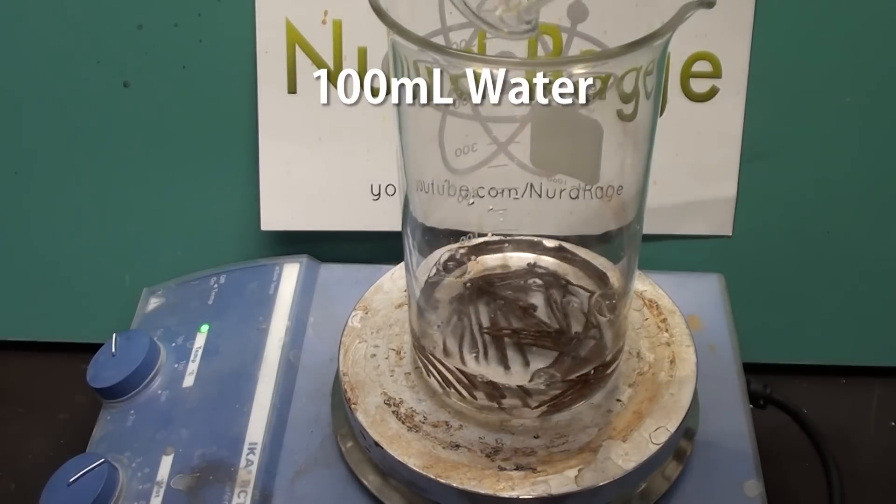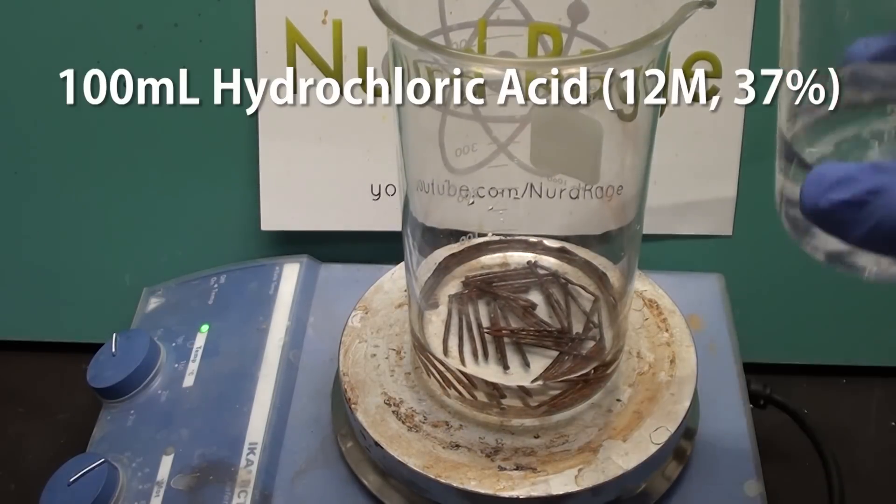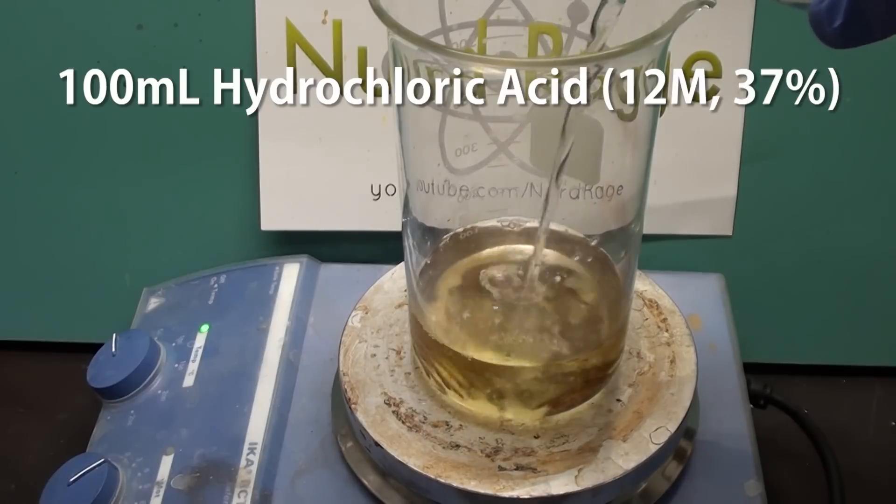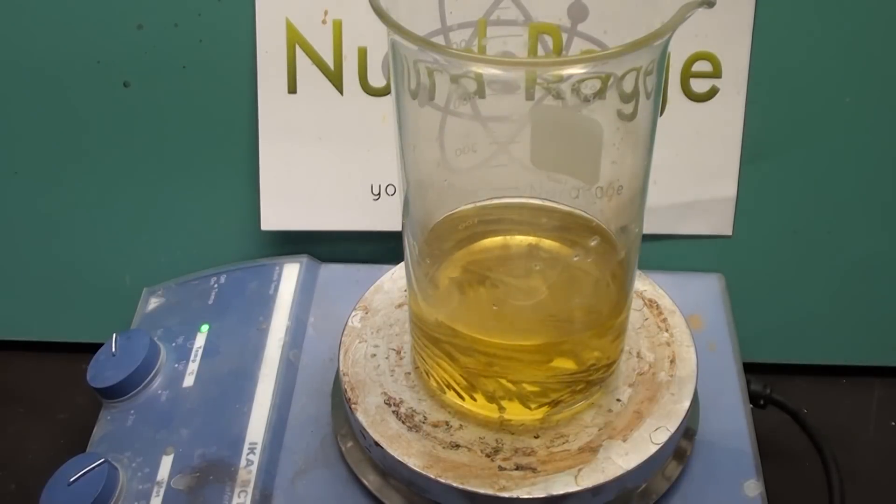Now add to it 100mL of water and then add 100mL of concentrated 12 molar hydrochloric acid. The acid should start dissolving the iron.